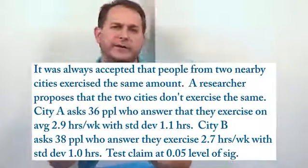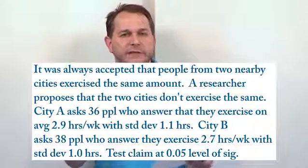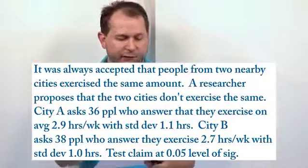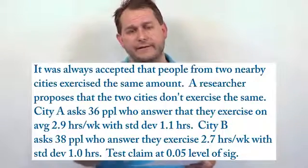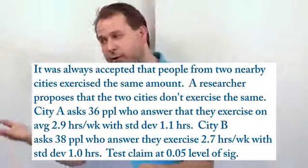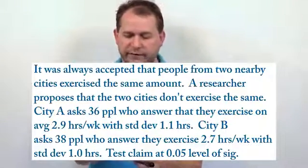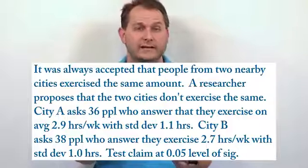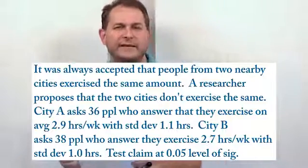When you read the very first sentence in this problem, it says it was always accepted. Now that's a phrase that kind of leads you to believe that the conventional thinking, the status quo thinking, is that people from two nearby cities exercise the same. So this first sentence is basically telling you what the null hypothesis is. Some problems are written so that they tell you what the null hypothesis is, and some are written in terms of the claim. It also tells you a researcher proposes that the two cities don't exercise the same. But in any case, the first sentence is rock-solid that it was accepted that people from these two nearby cities exercise the same amount.